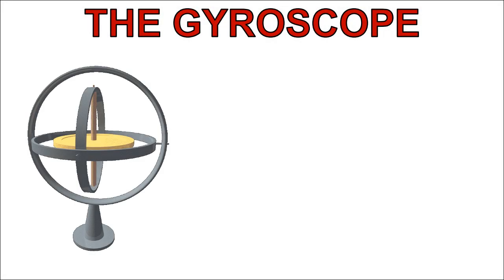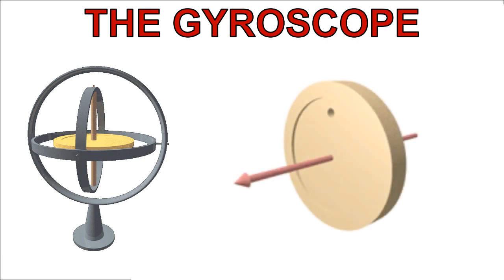The gyroscope is a device that is used to detect the deviation of an object from its desired orientation. This is done by spinning a circular disc which is called the rotor. As the rotor is spun, it gains conservation of angular momentum, which effectively means it will try and maintain its orientation in space, unless acted upon by an external force.